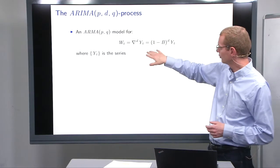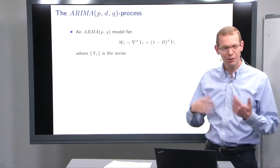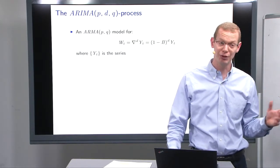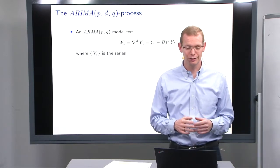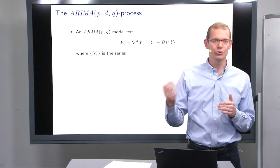And the differencing operator, just to recap, is 1 minus b, take that to the d power, and then you're done. Then you can just keep doing that as a trick, including d, but typically it's either 0, then you are in a plain stationary ARMA model, or 1 or 2.